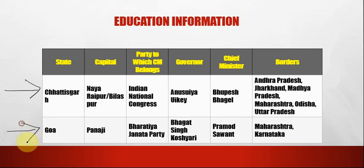The next state is Goa. The capital of Goa is Panaji. The party to which the CM belongs is Bharatiya Janata Party. The governor is Bhagat Singh Koshyari. The chief minister is Pramod Sawant. The borders are Maharashtra and Karnataka.